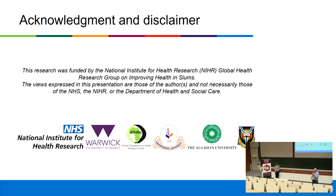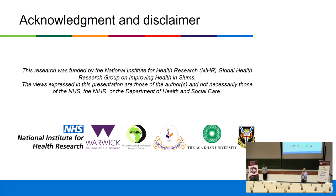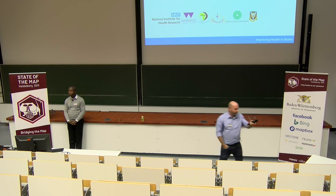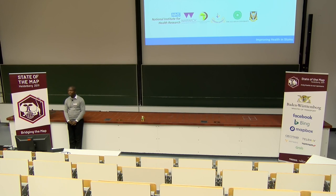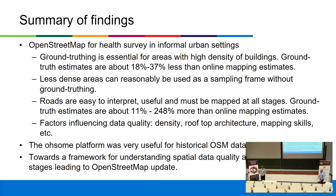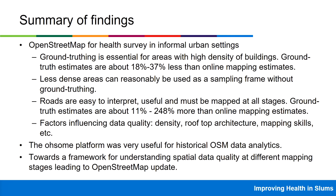Thank you, Godwin, for another very good talk with interesting findings. We'll take questions now. A question from the audience: regarding the 18 to 37 percent of buildings being less than the online mapping estimates — similar findings have been observed from Botswana to Guatemala and Liberia during field mapping activities, with very similar percentages. Is this from similar informal urban settings? It has been found in both urban and rural areas. Was imagery date a factor — what was the imagery date you were working with?